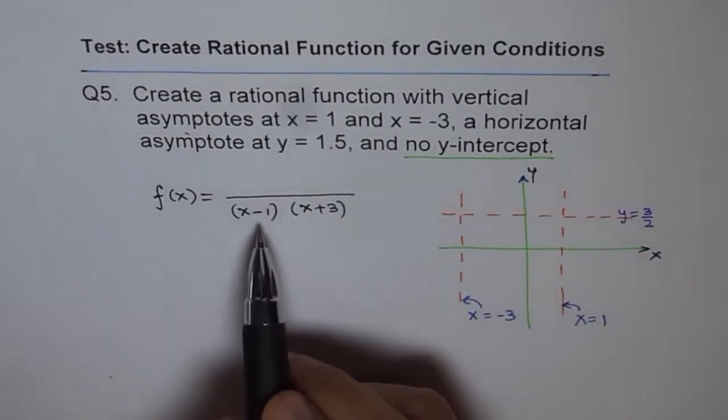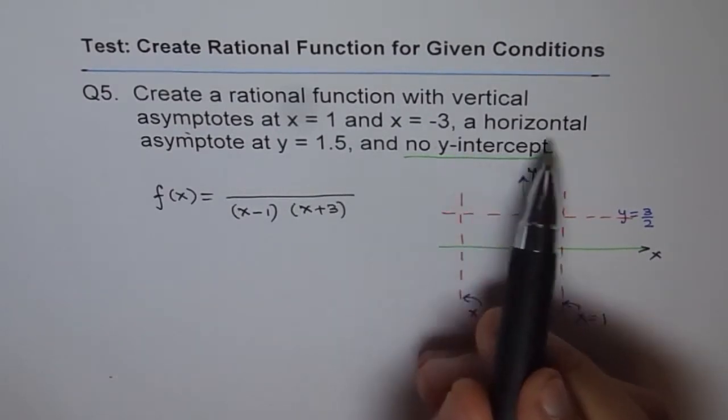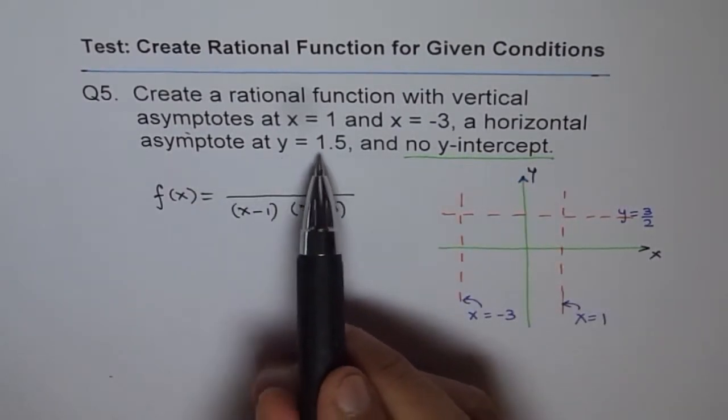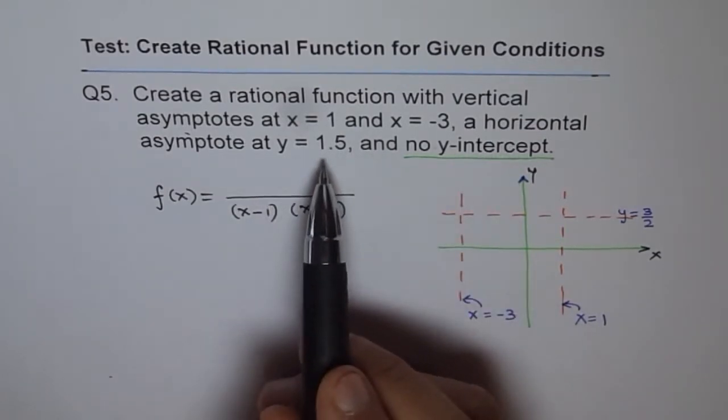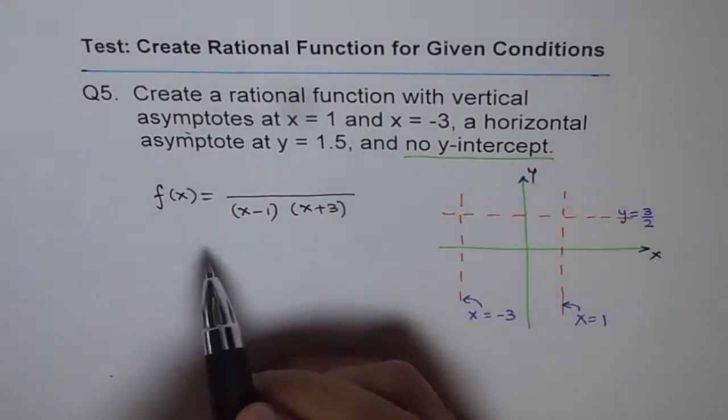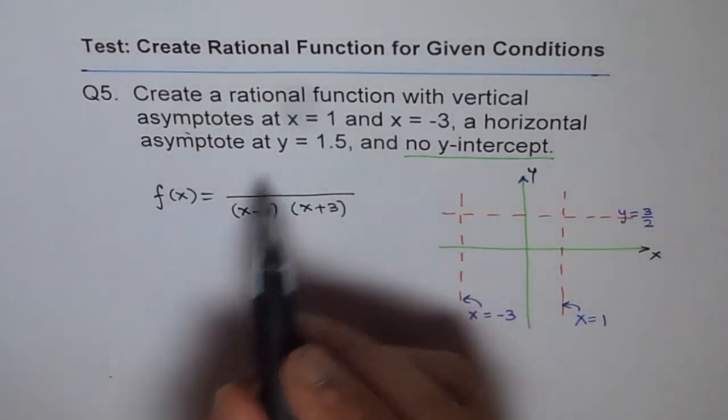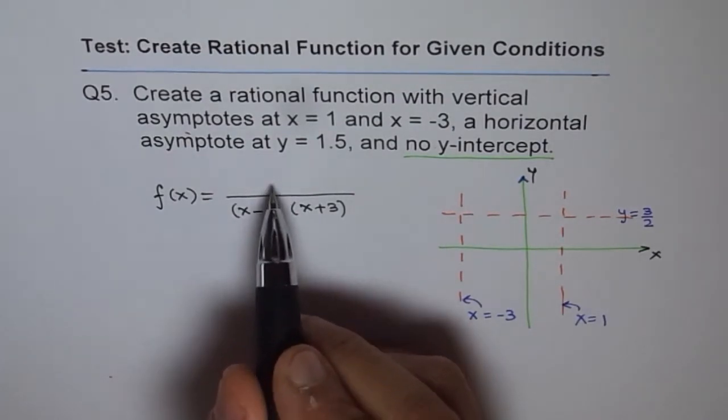So we got x minus 1 and x plus 3 in the denominator. That gives me a degree of 2 in the denominator. Now we have horizontal asymptote at y equals 1.5. So if there is a horizontal asymptote of some value, then this value is actually the ratio of leading coefficients. So 1.5, I can write 1.5 here and the coefficients should be the same.